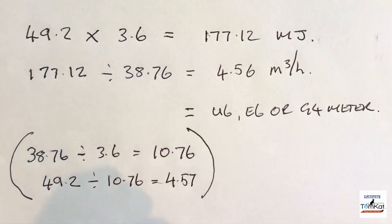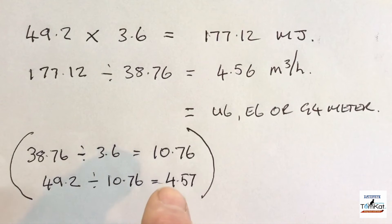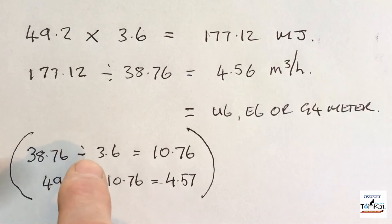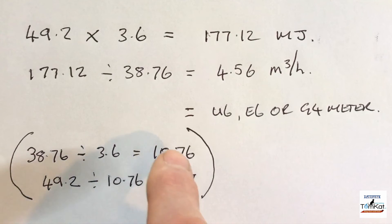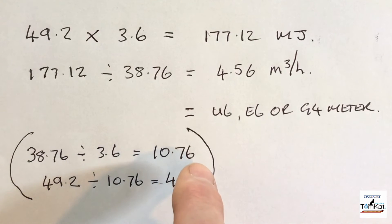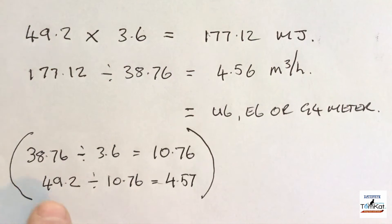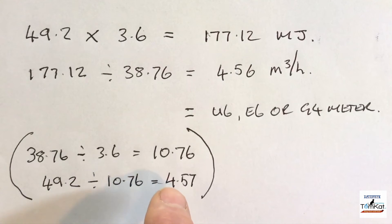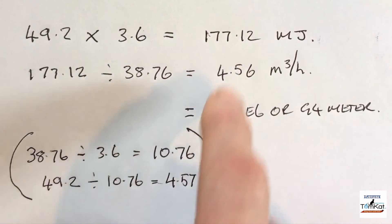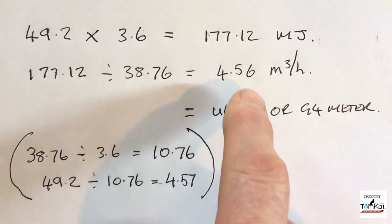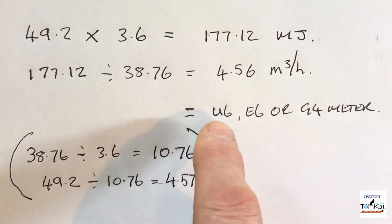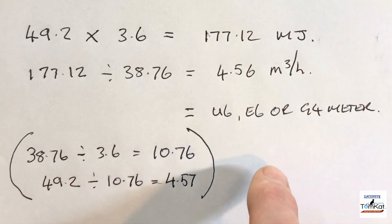For those who want a shortcut: divide 38.76 by 3.6 to get 10.76. Then instead of the full two-step conversion, simply take your diversity-adjusted kilowatts (49.2) and divide by 10.76, giving 4.57 m³/hr — only 0.01 different. You can still select a U6, E6, or G4 gas meter.